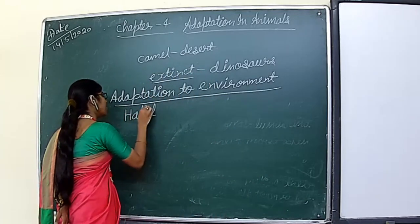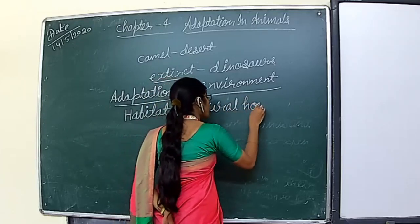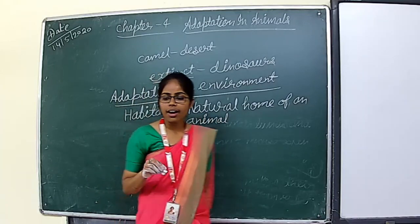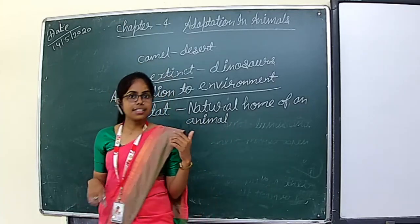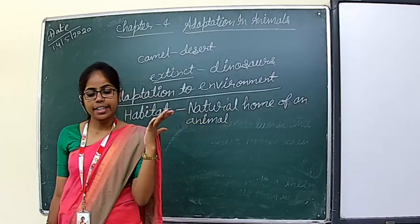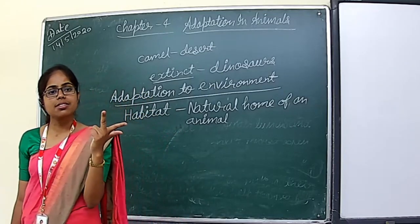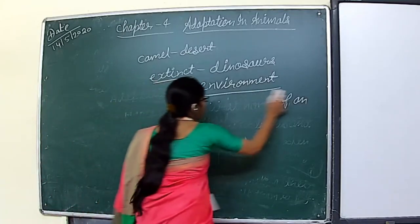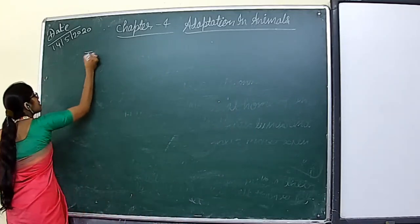Habitat is the natural home of an animal. According to their habitat, animals are classified into five categories: terrestrial animals, aquatic animals, amphibians, arboreal animals, and aerial animals. We will now study the first categorization of animals according to their habitat in detail — that is terrestrial animals.